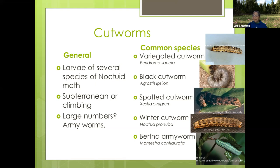Cutworms can be subterranean — certain ones do their damage underground — or climbing. They can actually climb up into fruit trees and cause quite a bit of damage. If you find them in large numbers, they're called armyworms.